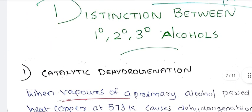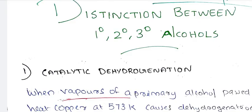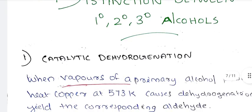Next, we will discuss the distinction of primary, secondary, and tertiary amines — and also primary, secondary, and tertiary alcohols. As I discussed in this chapter, we have three methods. The first method is catalytic dehydration. For catalytic dehydration, the reagent used is copper at 573 Kelvin.